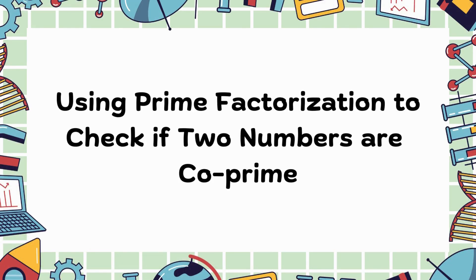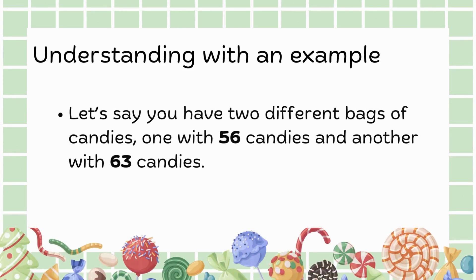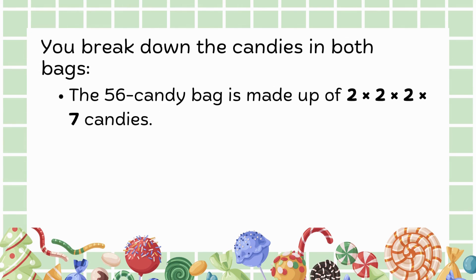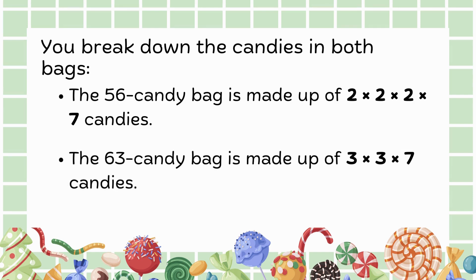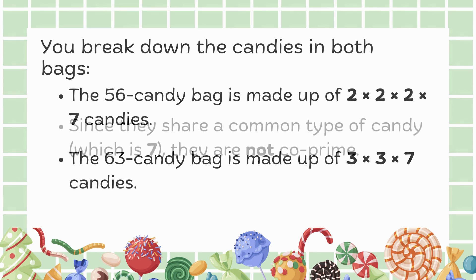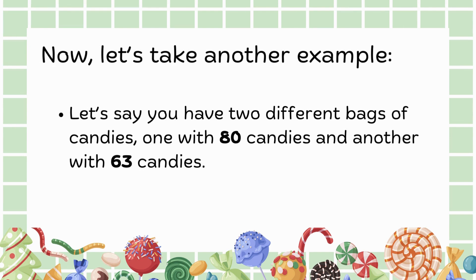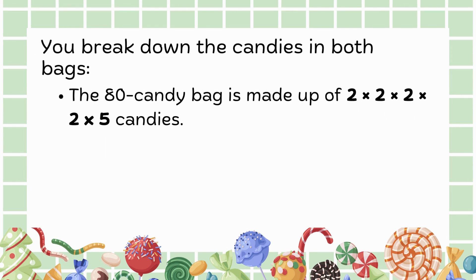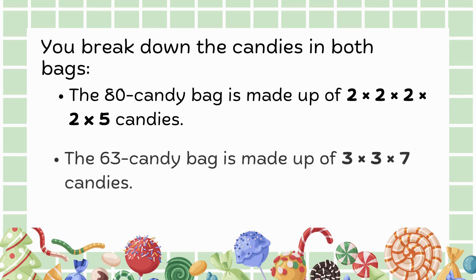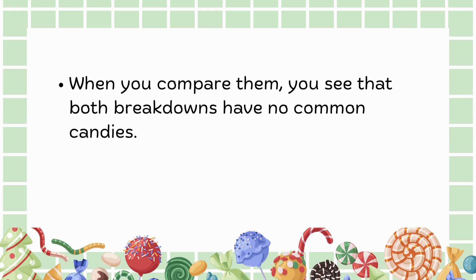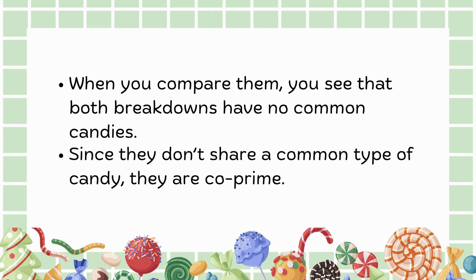Now, let's see how to use prime factorization to check if two numbers are co-prime. Suppose you have two bags of candies, one with 56 candies and another with 63 candies. You break down the 56 candy bag into 2 times 2 times 2 times 7, while the 63 candy bag breaks down into 3 times 3 times 7. Since they share a common factor of 7, they are not co-prime. Let's take another example with bags of 80 and 63 candies. The 80 candy bag breaks down into 2 times 2 times 2 times 2 times 5, and the 63 candy bag is 3 times 3 times 7. Since both breakdowns have no common factors, they are co-prime.